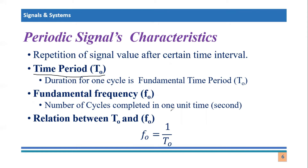So, the time duration in which you complete one cycle is known as the time period. Frequency is the number of cycles completed in one second. They are reciprocal of each other, as shown in this window. Frequency is f-naught and time period is T-naught, and they are reciprocal of each other. If you calculate one, you can calculate the other. Let's go to the graphical representation and take an example.